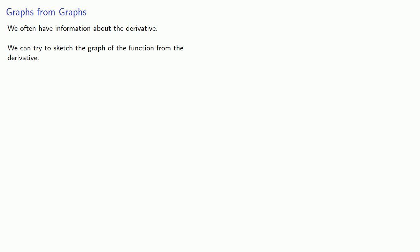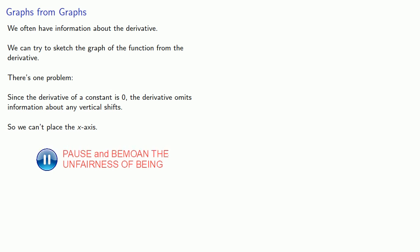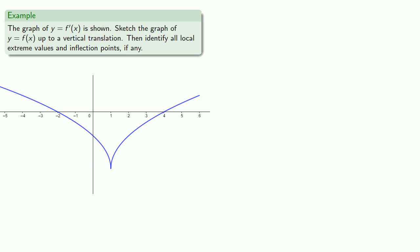We often have information about the derivative, and we can try to sketch the graph of the function from the derivative. There's just one problem: since the derivative of a constant is zero, the derivative omits information about any vertical shifts, so we can't place the x-axis. So, for example, let's say we have the graph of y equals f prime of x — let's try and sketch the graph of y equals f of x up to a vertical translation, and then identify all local extreme values and inflection points, if any.